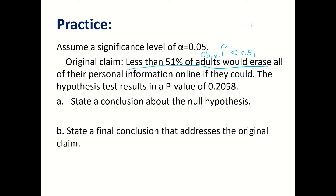Using the claim, the null hypothesis always has the equal sign: H0: p equals 0.51. The alternative hypothesis is H1: p is less than 0.51. Since we know the p-value is 0.2058, we compare it with alpha. It is obviously bigger than alpha, which is 0.05. This tells us the sample we picked is not very extreme — the probability of getting that sample is 0.2058, which is not a significantly low value. So we fail to reject the null hypothesis.